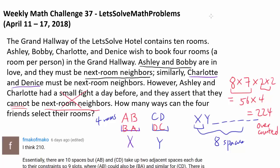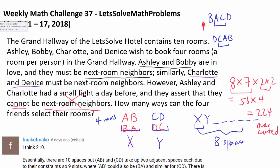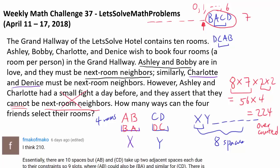The only problematic cases are when we have B, A, C, D in a row — where A and C are next to each other — or D, C, A, B in a row where C and A are next to each other. If we treat BACD as one block of four, the block can be placed with zero rooms to the left and six to the right, one room to the left and five to the right, and so on up to six rooms on the left. That gives seven positions for BACD. The same applies to DCAB, giving another seven cases — yielding 14 total invalid cases. So our final answer is 224 minus 14, which is 210.